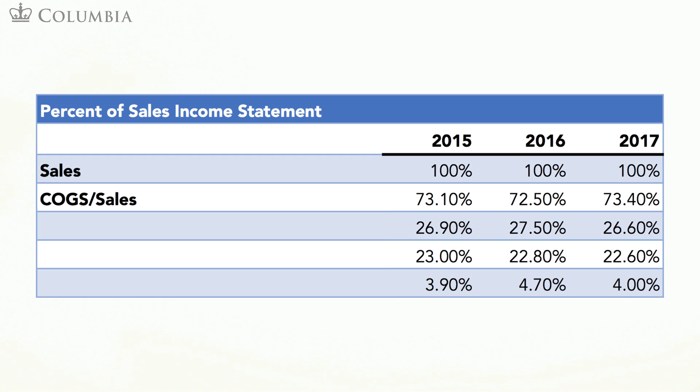We just learned about one financial ratio, COGS to sales. Let me show you other useful financial ratios related to items in the income statement. This table shows you the ratio of different items in the income statement to sales. For obvious reasons, this is called the percent of sales income statement. An important ratio is the gross profit margin.